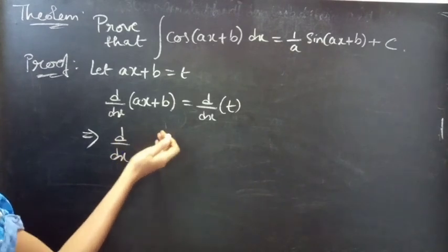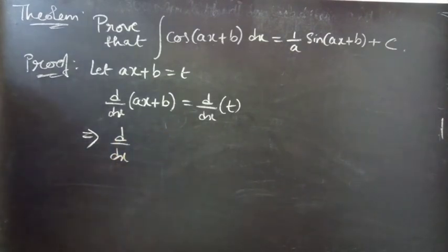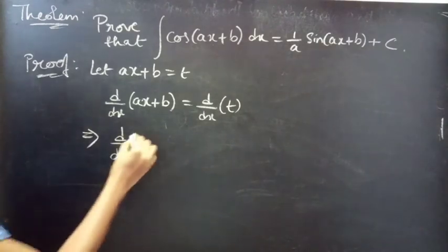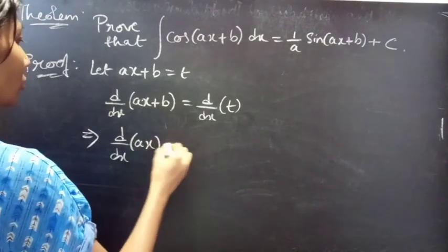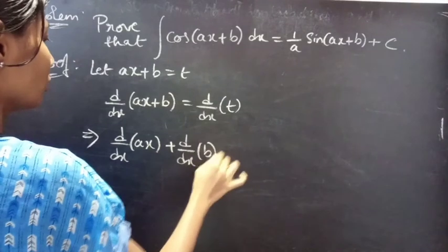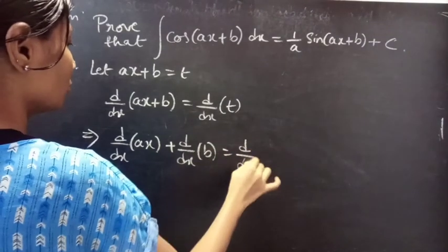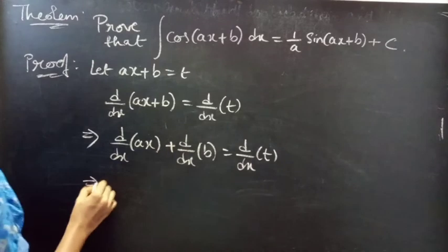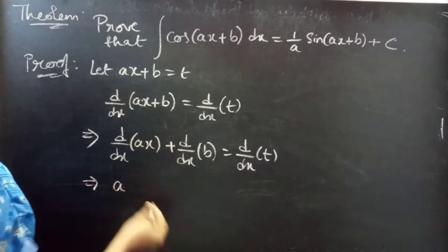So, d by dx of ax plus d by dx of b equals to d by dx of t. Since a is constant,